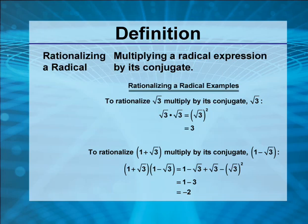Rationalizing a radical by multiplying a radical expression by its conjugate. Rationalizing a radical examples: To rationalize the square root of 3, multiply by its conjugate, the square root of 3.